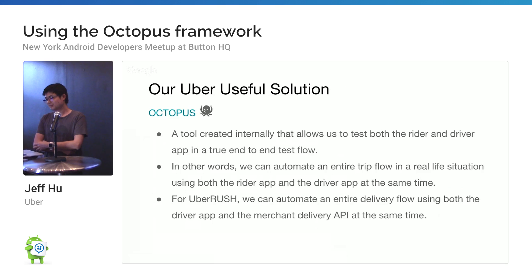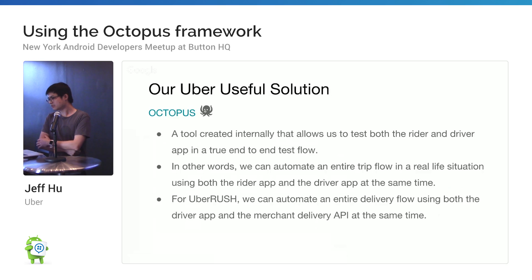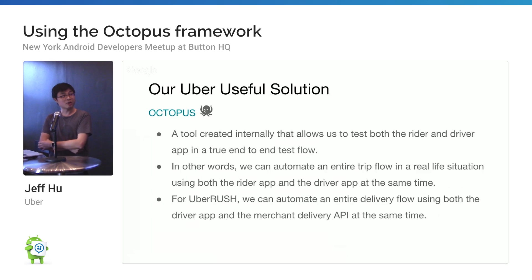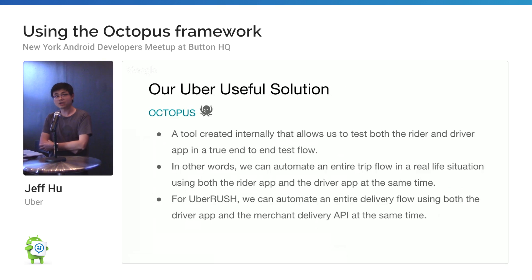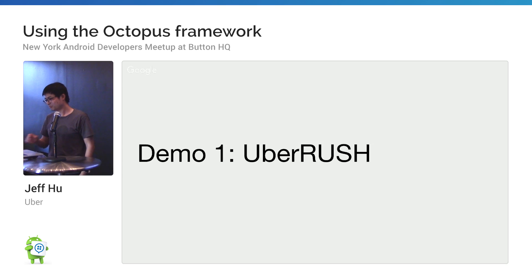So it comes to Octopus. This is a tool internally that allows us to test both rider and driver apps in a real E2E flow. We can automate the entire trip flow in a real-life situation using a rider app and driver app at the same time. For Uber Rush, as I mentioned, it's an app talking to the merchant dashboard, so we can simulate the driver app with our delivery API. By the way, the delivery API is publicly available.